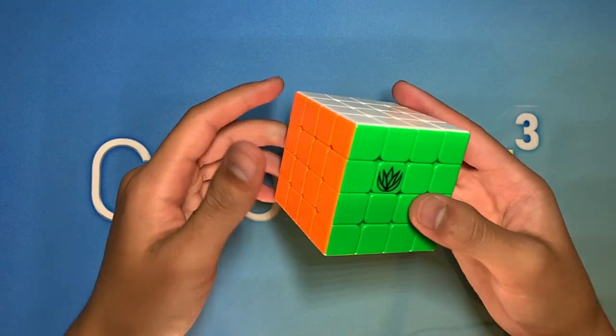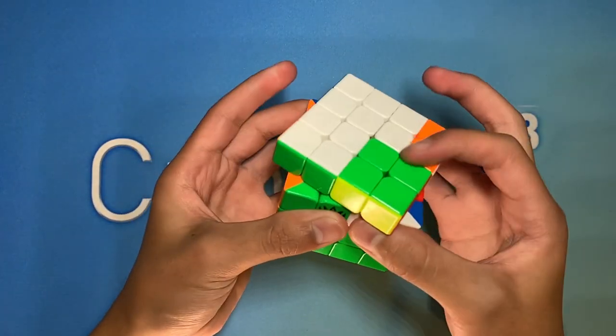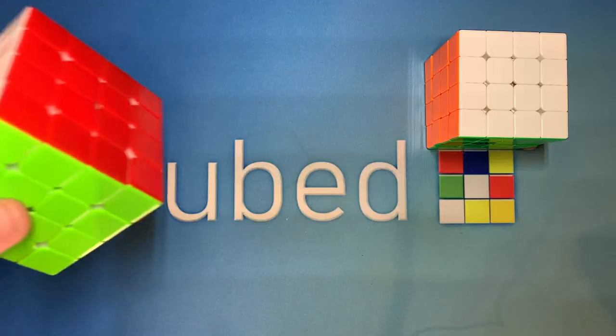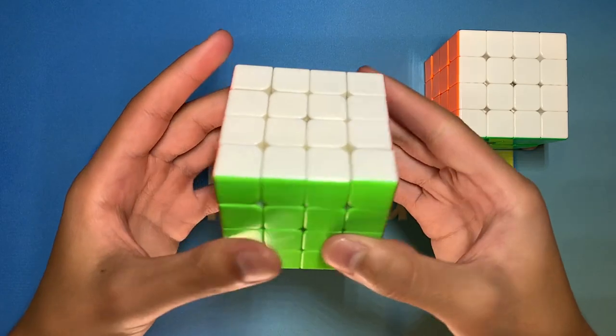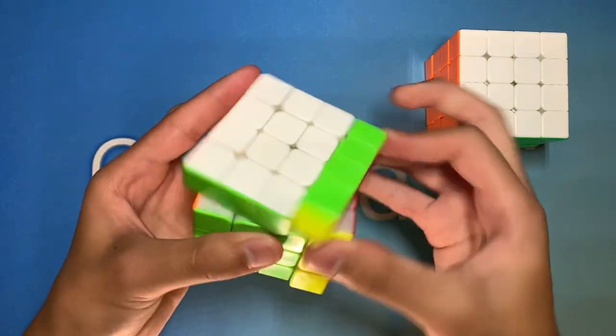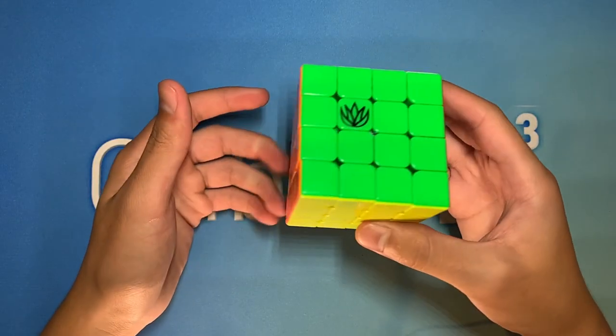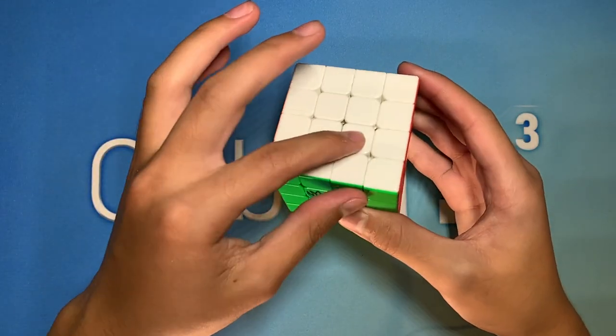I'm also really liking the strength of the magnets in this cube. I found that over time, with the Valk 4 right here, the strength of the inner magnets kind of felt too strong for my preference, and this cube definitely has slightly weaker magnets for the inner layers.